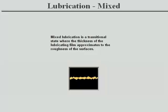As speed increases, there is progressively less contact and friction between the surfaces. This is the region of mixed lubrication where the thickness of the lubricating film approximates to the roughness of the surface.